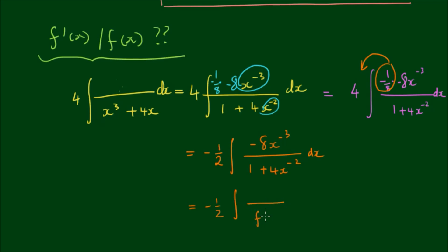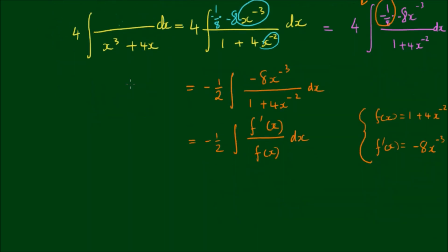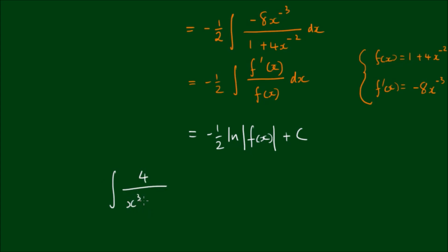If we let f of x equal the denominator, 1 plus 4x to the negative 2, then we can see that the numerator is the derivative of that — so we have f-prime of x on top. For completeness: f of x equals 1 plus 4 times x to the negative 2, and f-prime of x equals negative 8 times x to the negative 3. The integral of f-prime over f is simply the natural log of the absolute value of f of x plus a constant. So the integral of 4 divided by x cubed plus 4x dx equals negative 1/2 times the log of the absolute value of 4 divided by x squared plus 1, plus c.